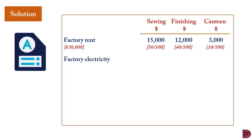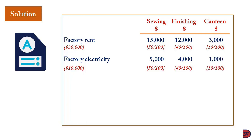For factory electricity, we also apportion based on factory space — the same suitable criteria. It will be 50/100 × $10,000 = $5,000 for sewing; 40/100 × $10,000 = $4,000 for finishing; and 10/100 × $10,000 = $1,000 for canteen.